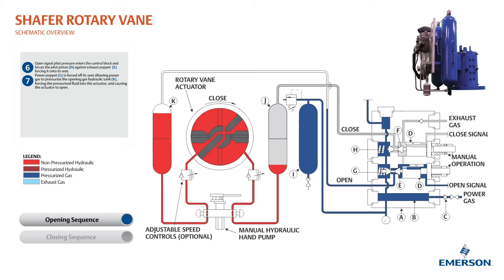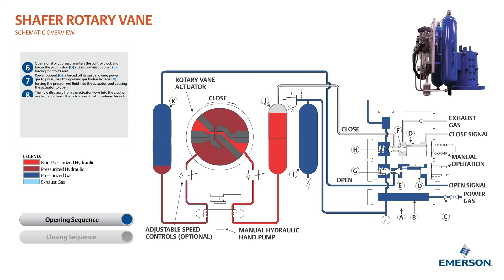This allows power gas to pressurize the opening gas hydraulic tank, forcing the pressurized fluid into the actuator and causing the actuator to open. The fluid displaced from the actuator flows into the closing gas hydraulic tank, which is open to atmosphere through the exhaust check valve in the poppet block.